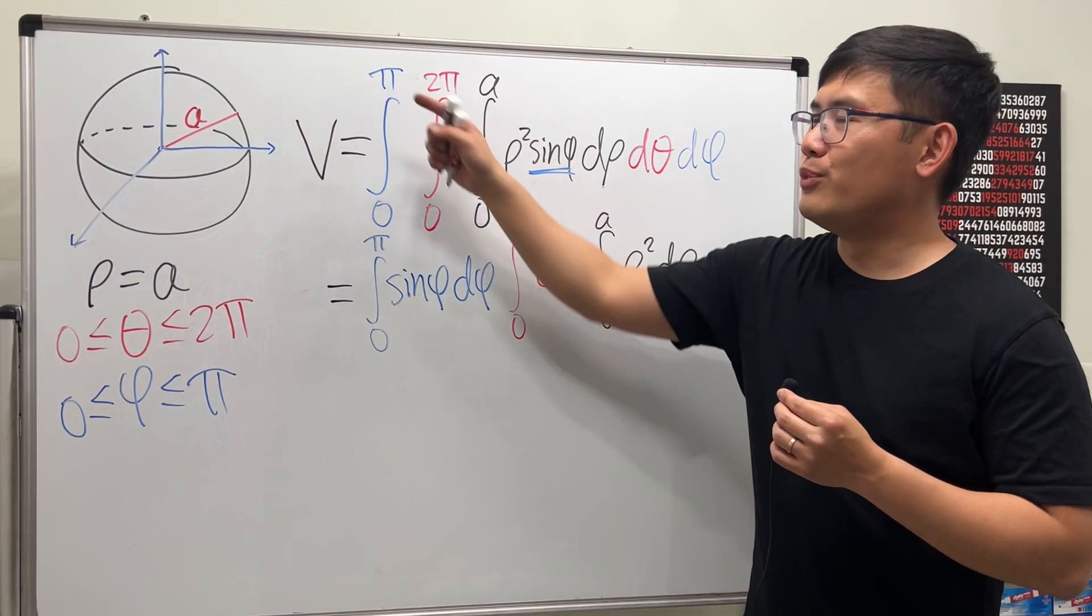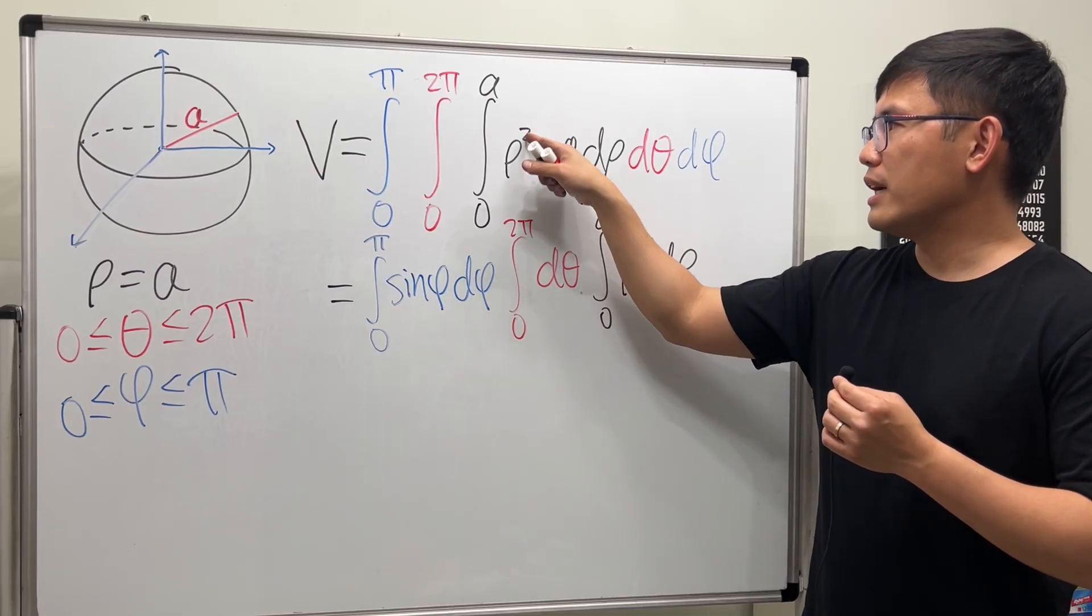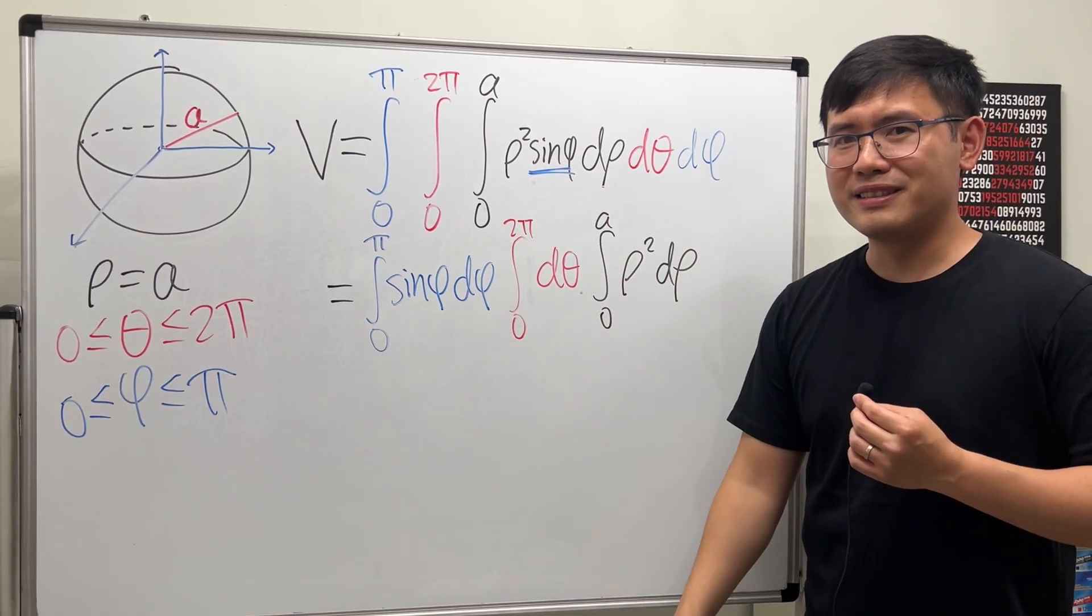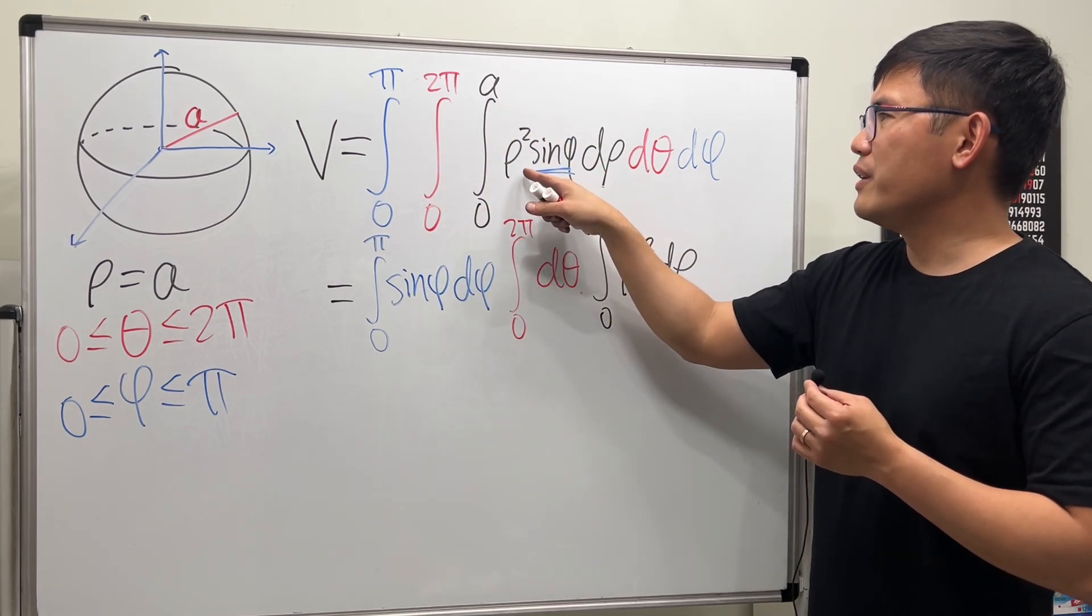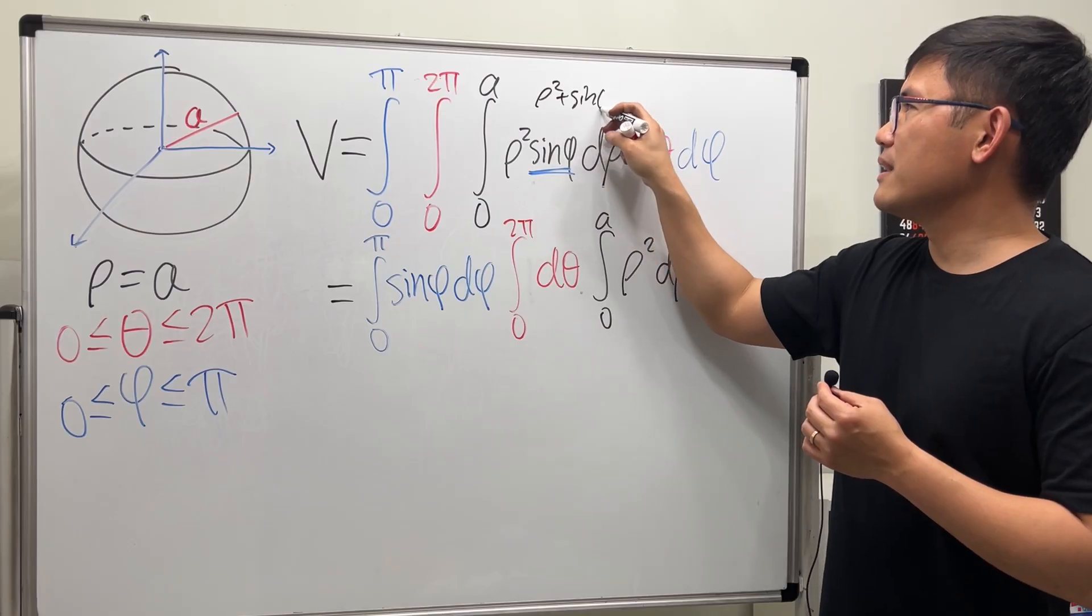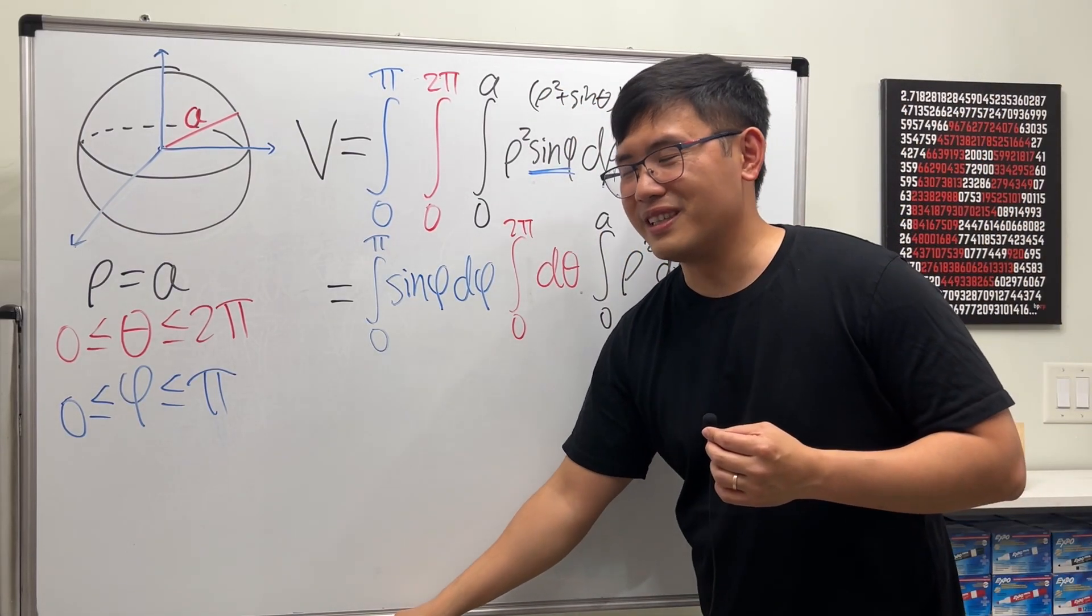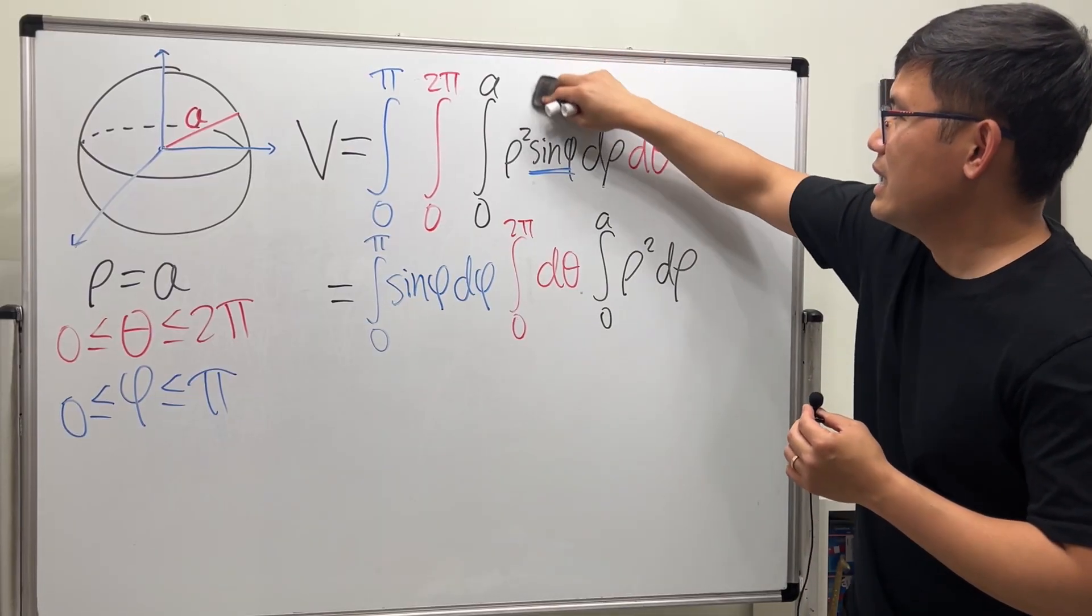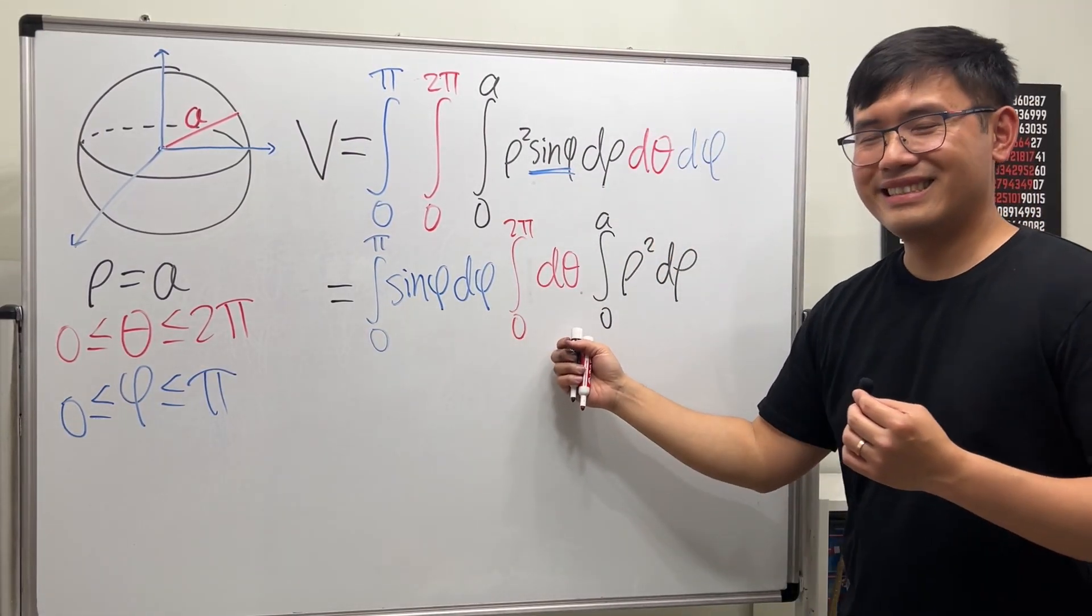Thanks to all this right here being constant, we can just, and also, it's just a multiplication, right? So we can do it like this. If this right here are some functions, or this right here is like, if you have ρ squared plus sin θ, cannot break it apart anymore, unfortunately. We have to be careful, if it's like that. But anyway, this is what we have.